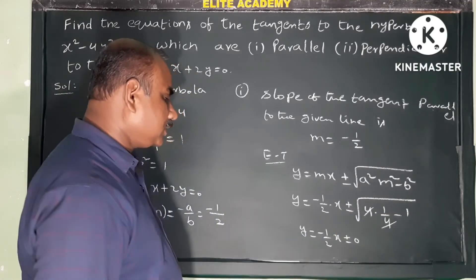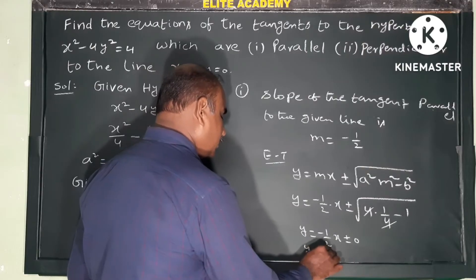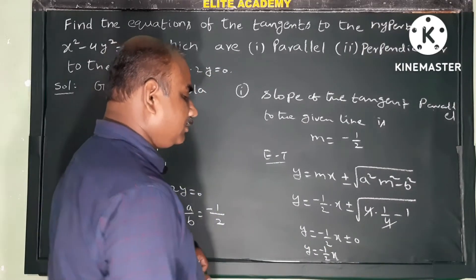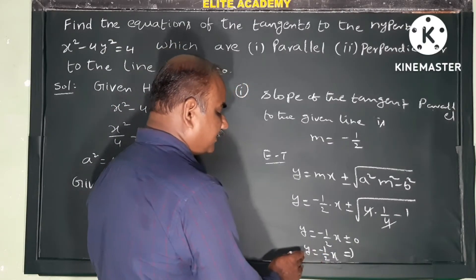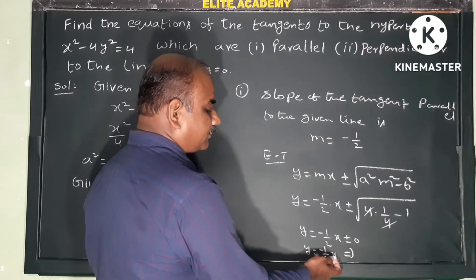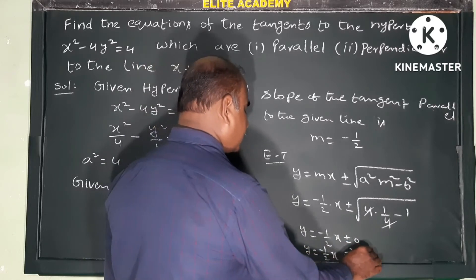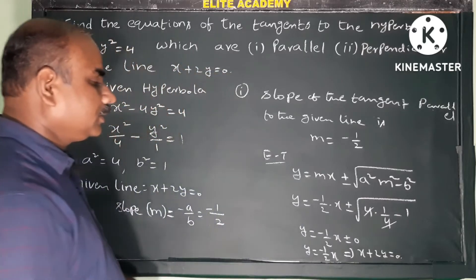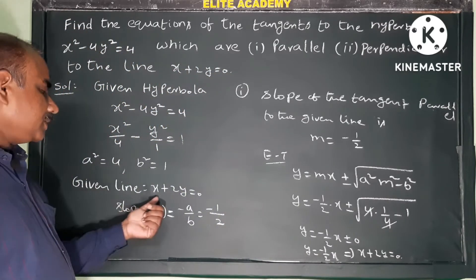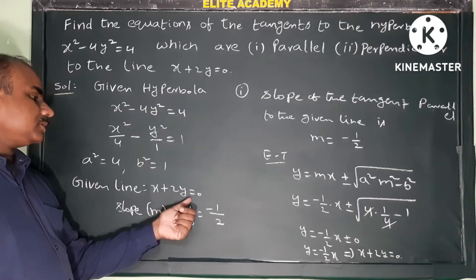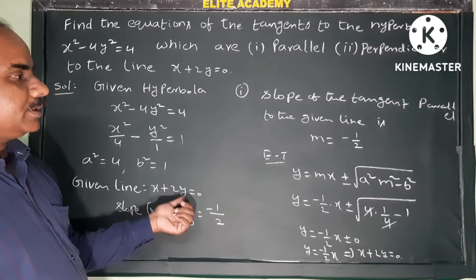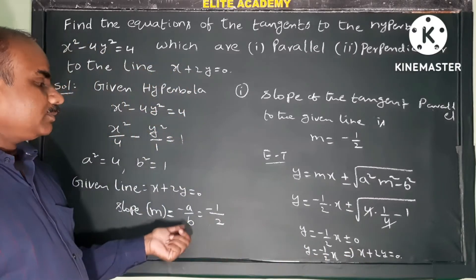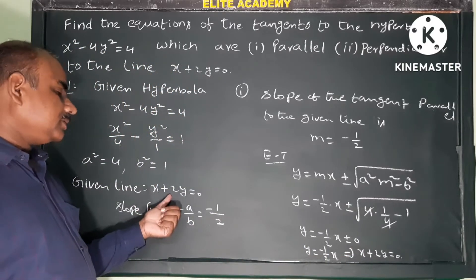So y equals minus 1 by 2 x plus or minus 0, which simplifies to y equals minus 1 by 2 x. Multiplying both sides by 2 gives 2y equals minus x, so x plus 2y equals 0. This is the same as the given line itself, meaning there is no parallel tangent to the straight line.